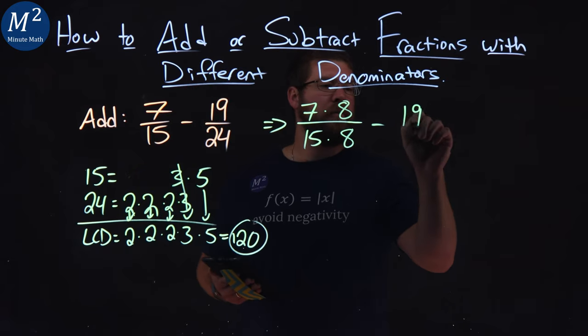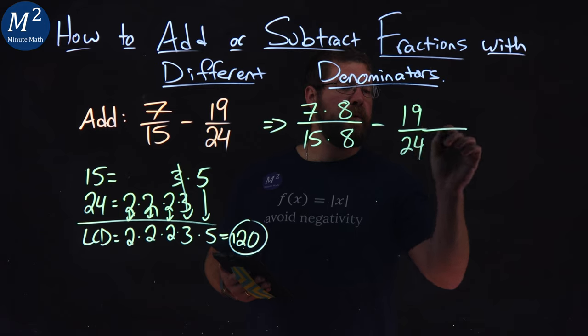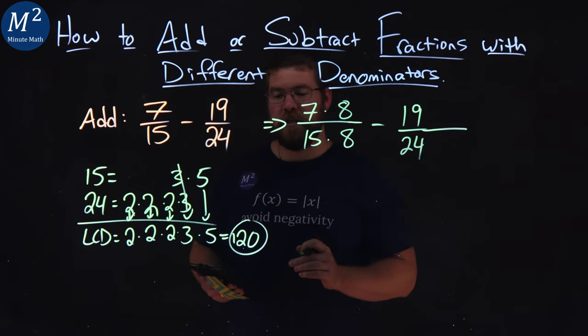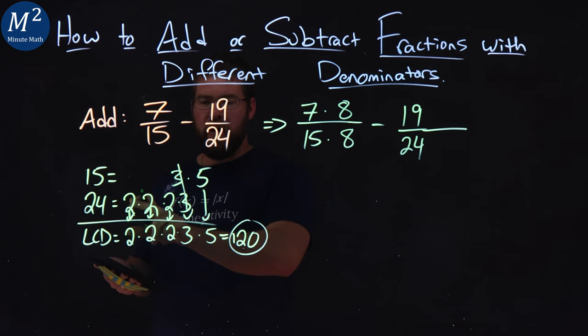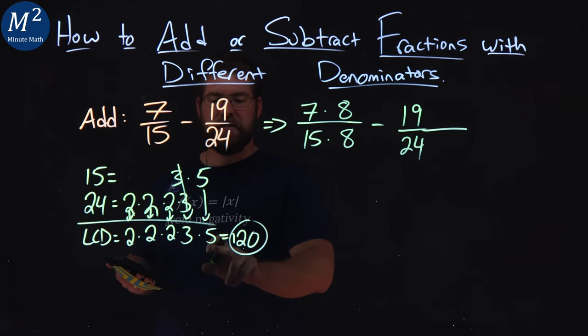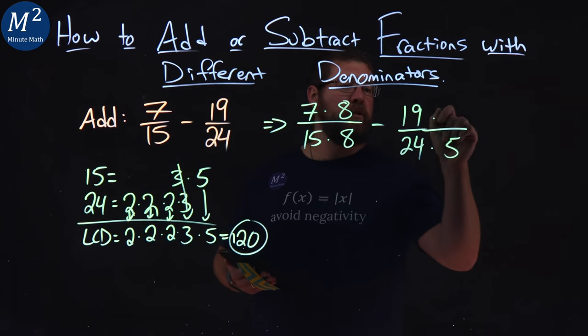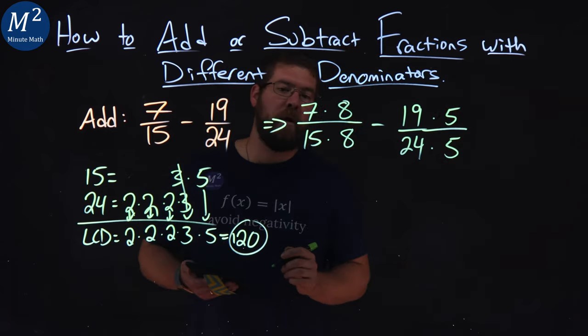Minus 19 over 24. What is 24 missing to get to 120? We have all the factors come down except for just this 5. 5 times 24 is 120. Multiply the numerator by 5 as well.